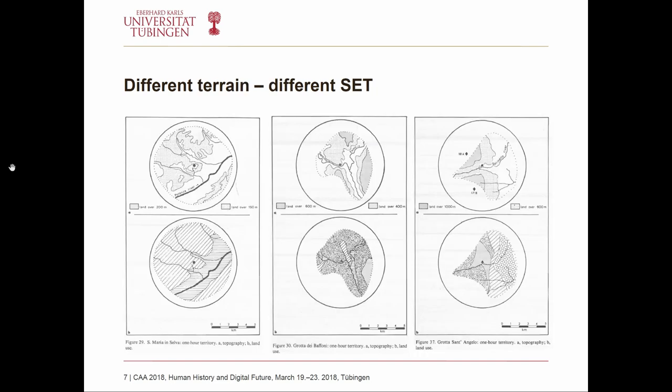When you combine walking distances with topography and terrain, you end up with many different site exploitation territories. When studying archaeological sites in flat terrain like northern Germany, the territories tend to be more circular. In more mountainous regions, territories take distorted shapes and can be much smaller than five kilometers — walking one hour in a steep direction simply doesn't get you very far.